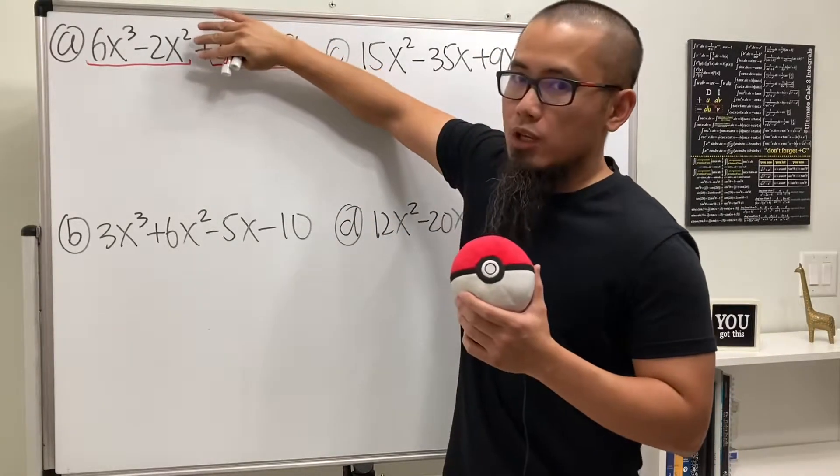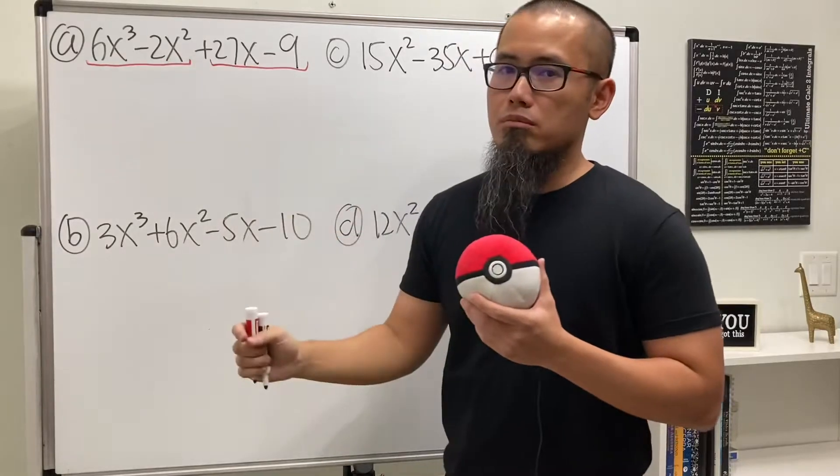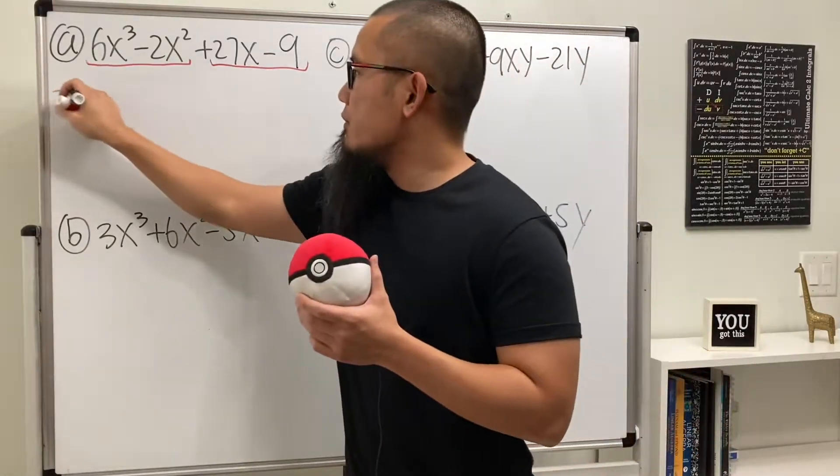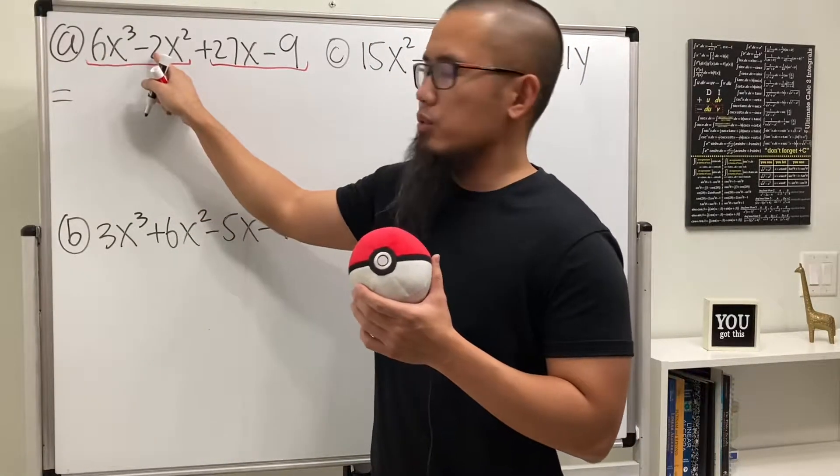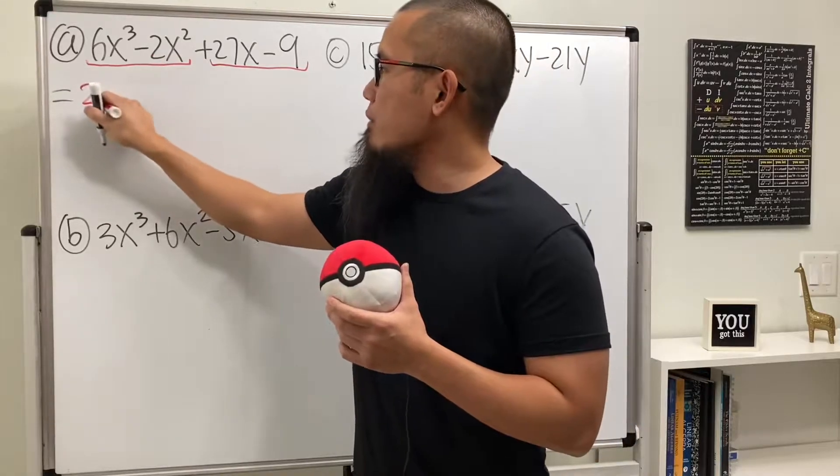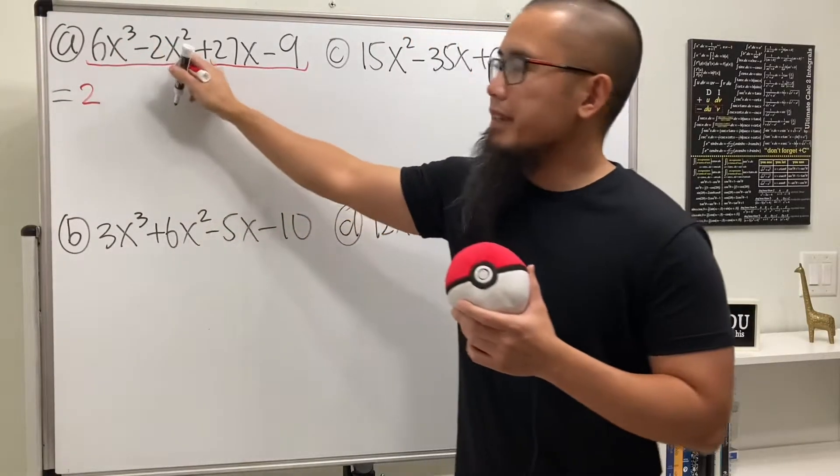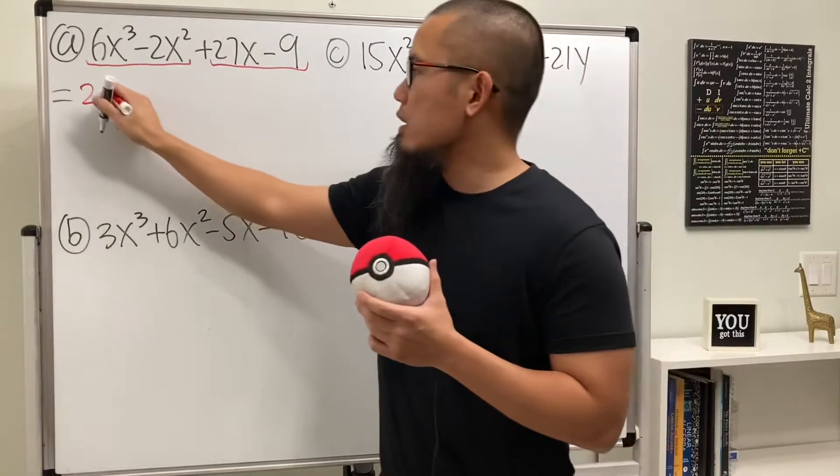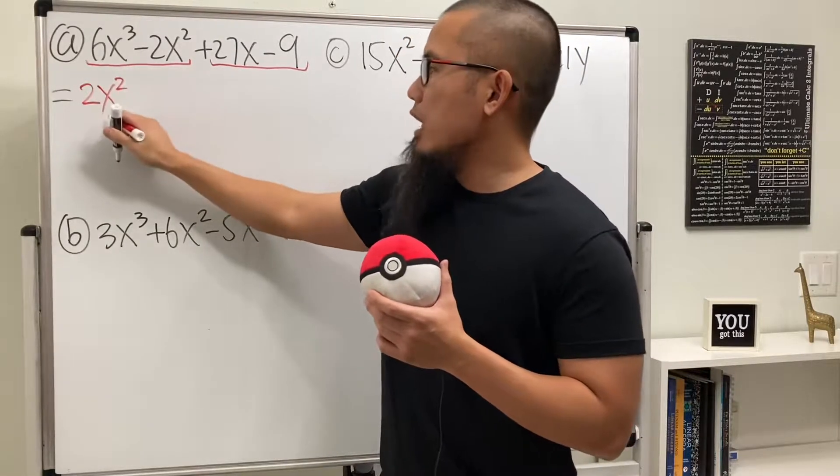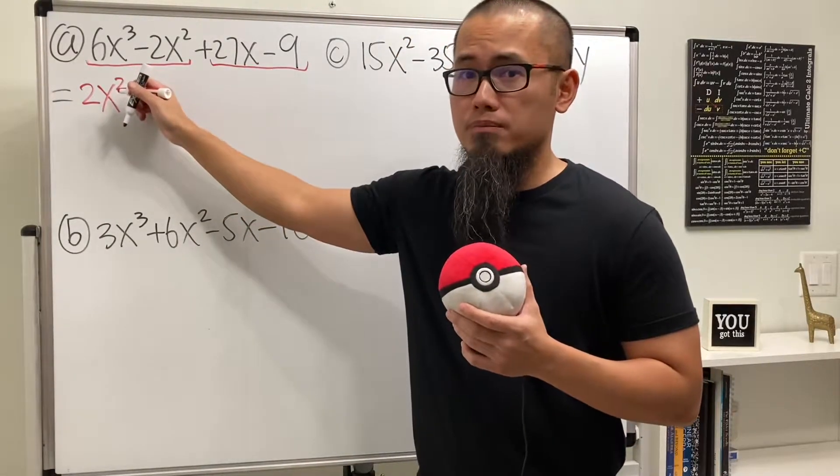If we ignore the last two terms, can we factor something out here? Yes. In terms of the number, 6 and minus 2, we can factor out 2. So let's put that down. And then x to the third power, x to the second power, we can factor out x squared, namely x to the smaller power.